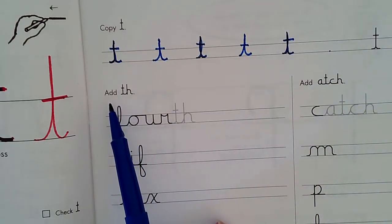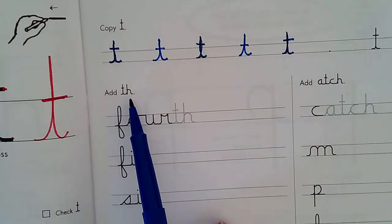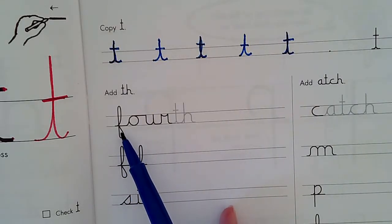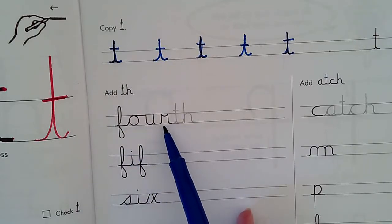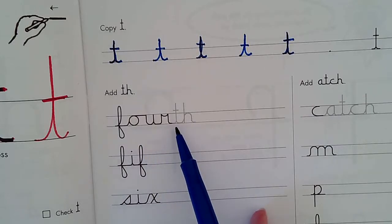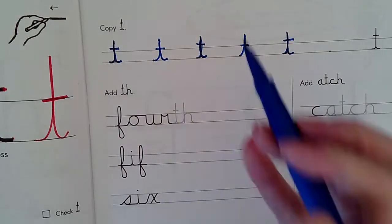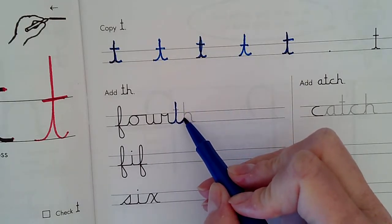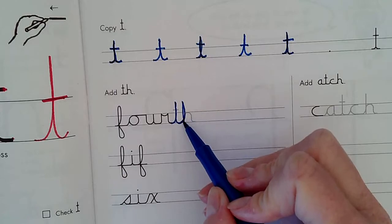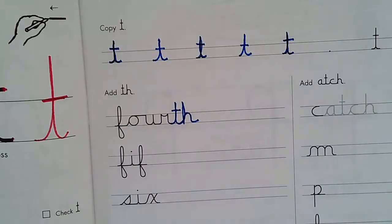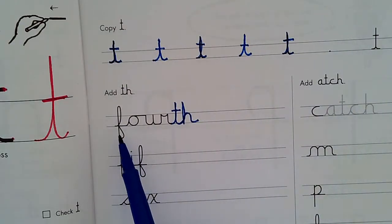Now it says here add TH. So we're finishing some words by adding TH. I see right here the letters F-O-U-R, which we have not practiced yet. So my job is to add the TH. I'm going to add T, go straight up and down to make my H, and then when I'm done with my H I go back and cross my T. And now the word says fourth.